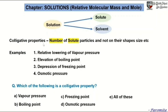Stress on the word number and solute particles. In our syllabus we have four examples of colligative properties. The first one: relative lowering of vapor pressure. Number two: elevation of boiling point. Number three: depression of freezing point. And number four: osmotic pressure.